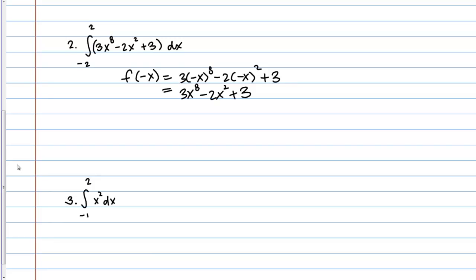Now, does that simplify to f(x)? Well, yeah, it does. Because f(x) is 3x to the 8th minus 2x squared plus 3. So, we've shown that f of negative x equals f(x). So, then this is an even function.